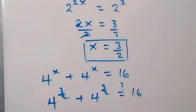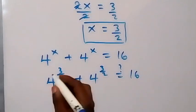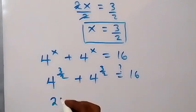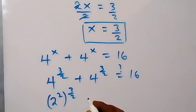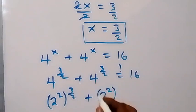From here, 4 is the same thing as 2 squared, then raised to 3 over 2, plus also 2 squared raised to 3 over 2. We have 2 raised to 3 over 2 plus 2 raised to 3 over 2.